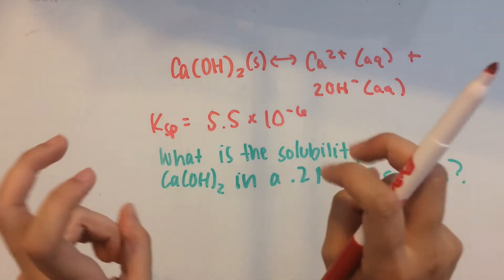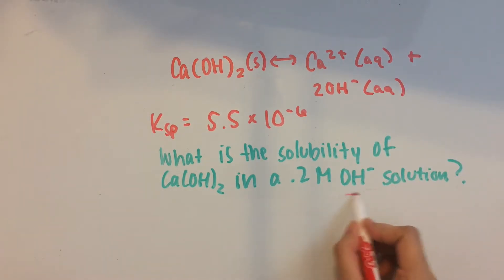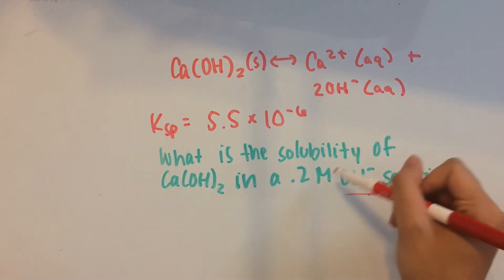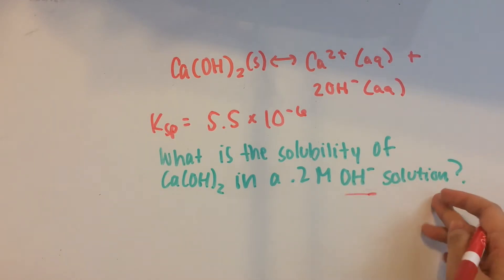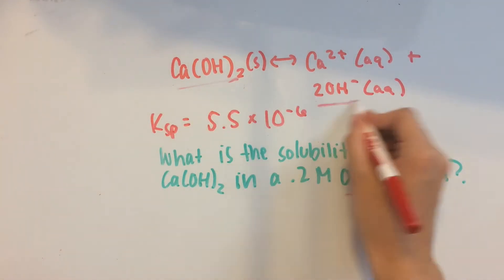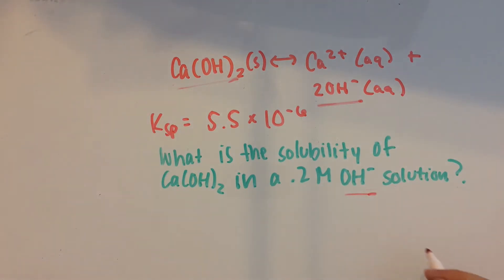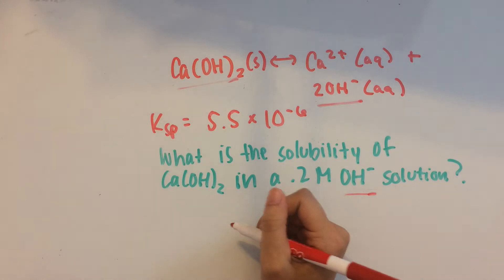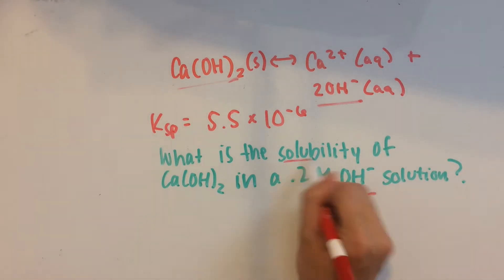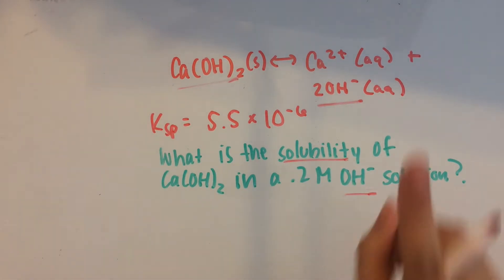The common ion in this case is OH⁻, because OH⁻ is present in the solution, and Ca(OH)₂ also dissolves into OH⁻ ions. So what we have to do to find the solubility is first write out the Ksp equilibrium equation.